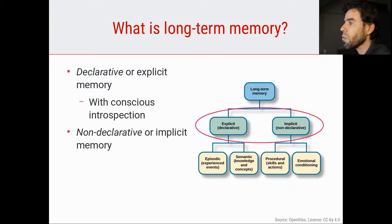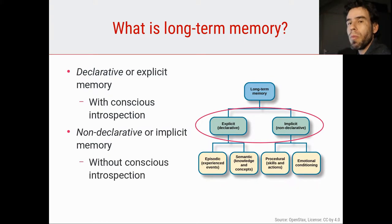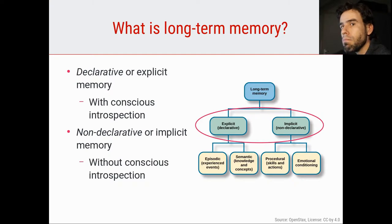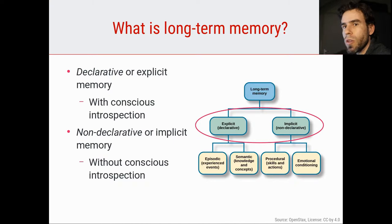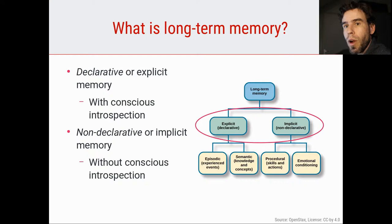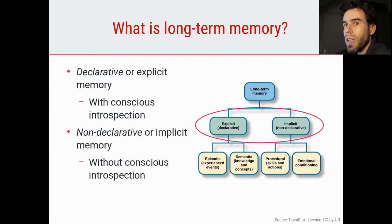Then we have non-declarative or implicit memory — forms of memory that you don't have conscious introspection into. For example, I can ride a bike, but I don't really have any conscious introspection into how exactly I do that. The fact that I can ride a bike is a form of declarative long-term memory, but the details of how I ride a bike and keep my balance — that is definitely implicit long-term memory, because I have no insight into exactly how I am able to do that. I just am.